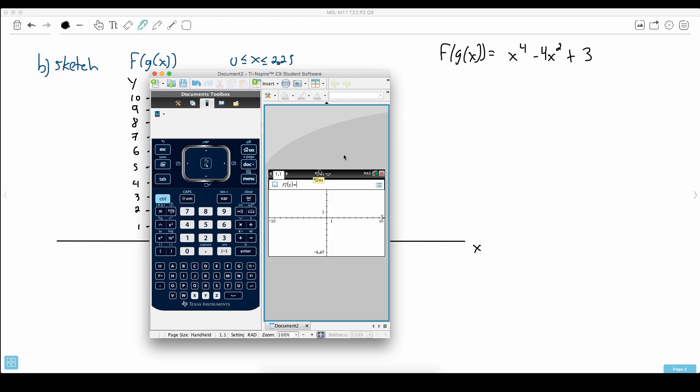What function do I want? I'll put in my trusty function here. I want x to the power of 4. What do I want then? Minus 4 x squared plus 3.